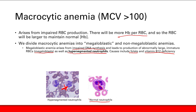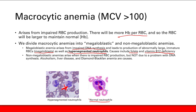Megaloblastic anemia arises from impaired DNA synthesis. A non-megaloblastic anemia arises when there's impaired red blood cell production, but it's not a problem with DNA synthesis — there's some other problem, but the DNA synthesis is fine. You would not see hypersegmented neutrophils in non-megaloblastic anemia. Causes of non-megaloblastic anemia include alcohol, liver disease, and Diamond-Blackfan anemia.